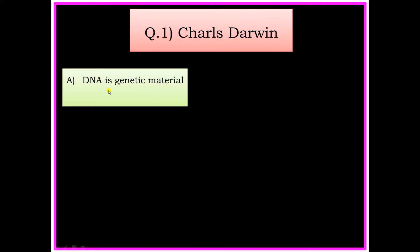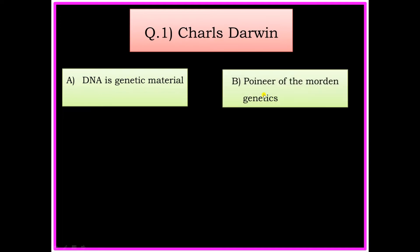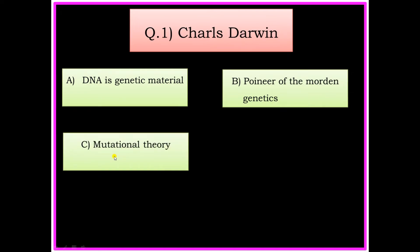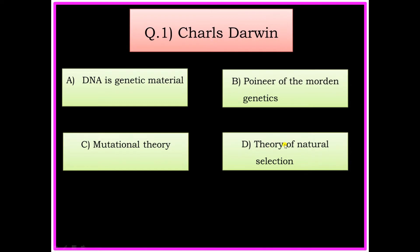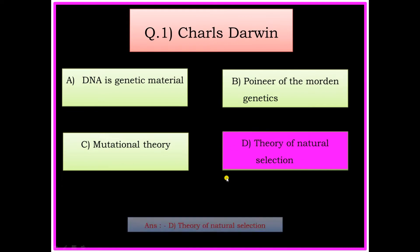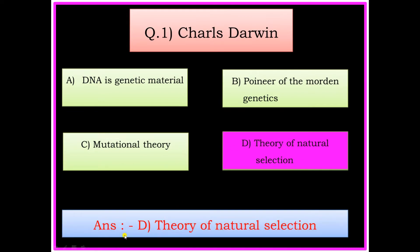Question number 1: Charles Darwin. Options: A) DNA is genetic material, B) Pioneer of Modern Genetics, C) Mutational Theory, D) Theory of Natural Selection. The answer is: Theory of Natural Selection.